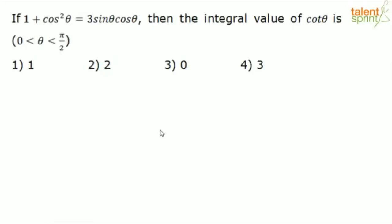The first question says: if 1 plus cos squared theta is equal to 3 sin theta cos theta, then the integral value of cot theta is what? What we do is substitute some random values without violating the given conditions, and substitute similar values in the answer options to verify which one matches. That will give you the answer.